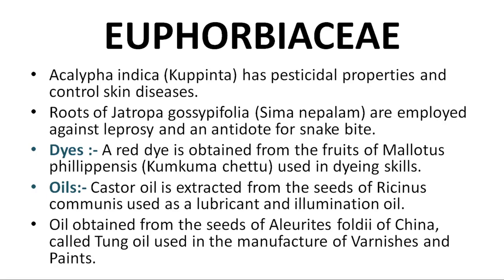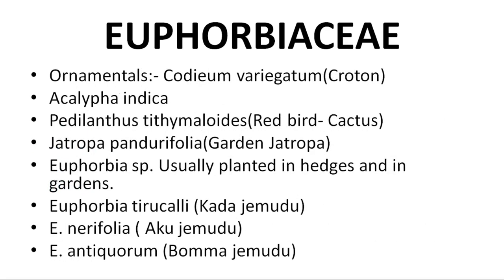Mallotus philippinensis fruits yield a red dye used in dyeing. Castor oil is also used as a lubricant and illumination oil in lamps. Oil from the seeds of Aleurites fordii of China is called tung oil, used in varnishes and paints. Ornamental plants include Codiaeum variegatum, Acalypha indica, Pedilanthus tithymaloides (redbird cactus), Jatropha panduraefolia, and various Euphorbia species planted in hedges and gardens.